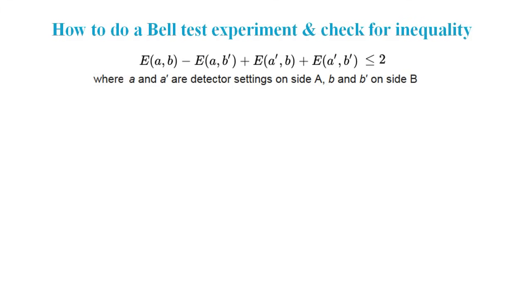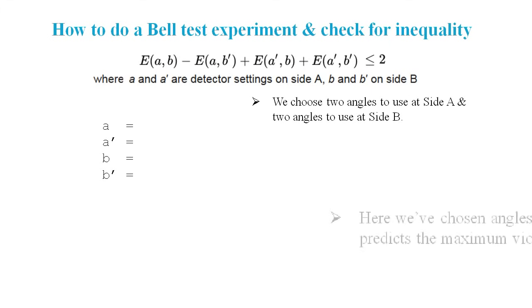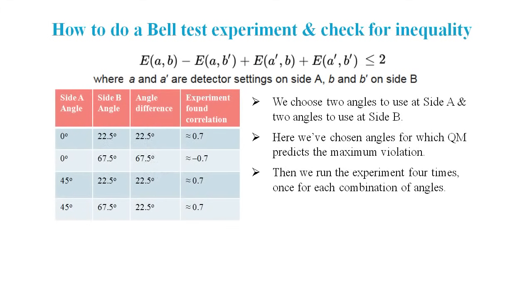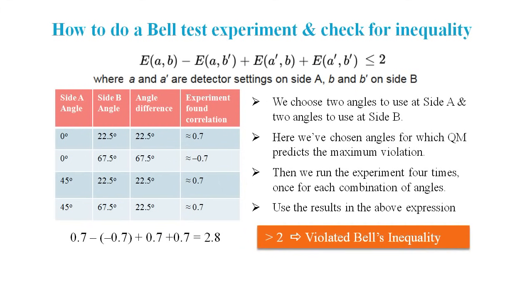So how can we do an experiment to test for this inequality? First, we need to choose two angles to use at side A, and two angles to use at side B. Some choices of angles won't violate the inequality, but angles like the ones selected here should lead to the biggest violation according to quantum mechanics. Then we run the experiment for each combination of filters, and in theory, according to quantum mechanics, we should get correlation values somewhere close to these 0.7 values shown in the table. We then plug the results into the formula and see what we get. If we get a value greater than 2, then we've violated Bell's inequality.